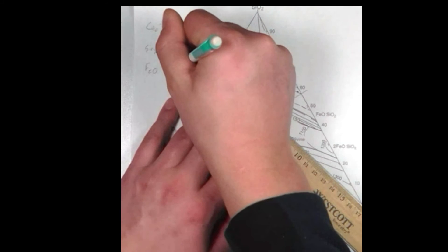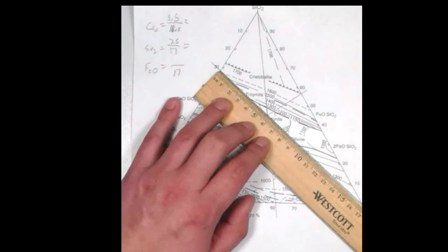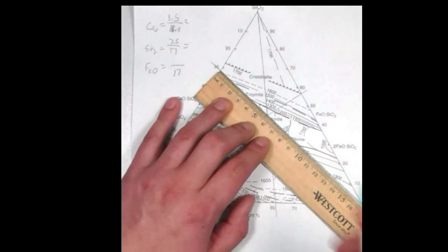Our total length for FeO is 17, and the distance from the zero side to our point is 5.6.